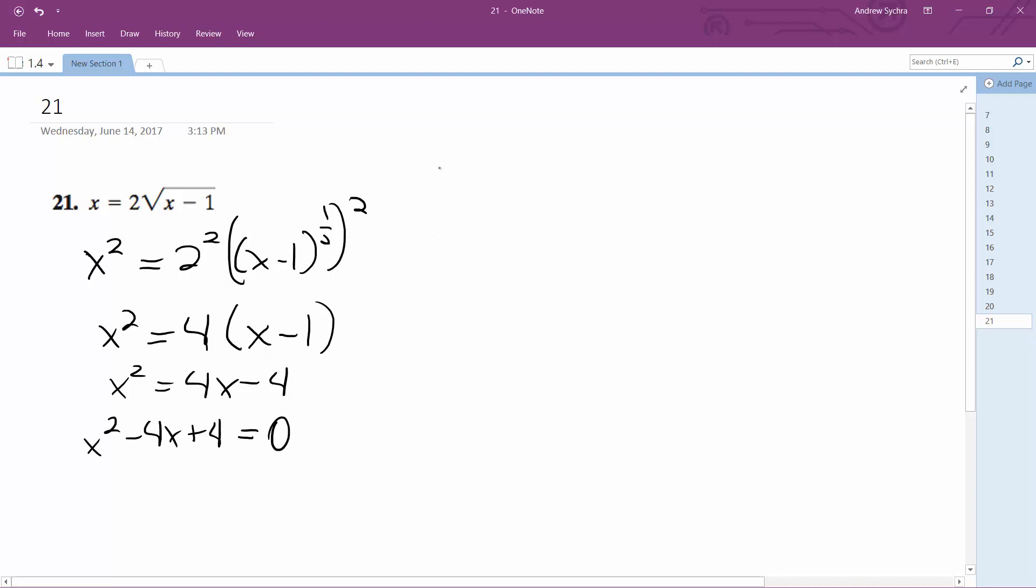And I'm going to use the quadratic formula, which is the opposite of b plus or minus square root of b squared minus 4ac over 2a.